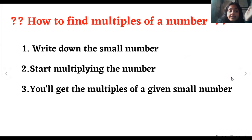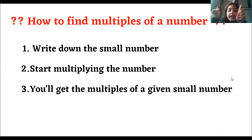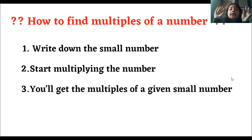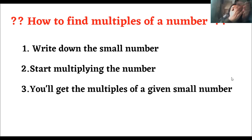Now we are going to see how to find the multiples of one small number. Multiples are always in groups — there will always be many of them; there will never be just one multiple. For example, for five we saw: five, ten, fifteen, twenty, twenty-five, thirty — like that, it will continue.